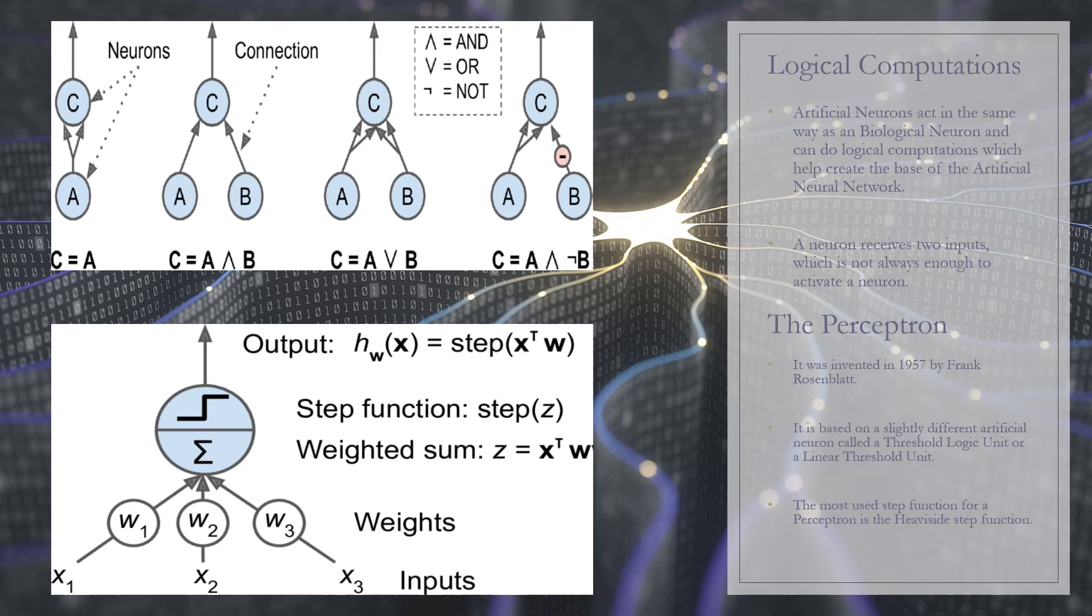Now the perceptron is one of the simplest artificial neural network architectures, which was invented by Frank Rosenblatt in 1957. It slightly differs from the artificial neuron where it uses threshold logic unit, or linear threshold unit.